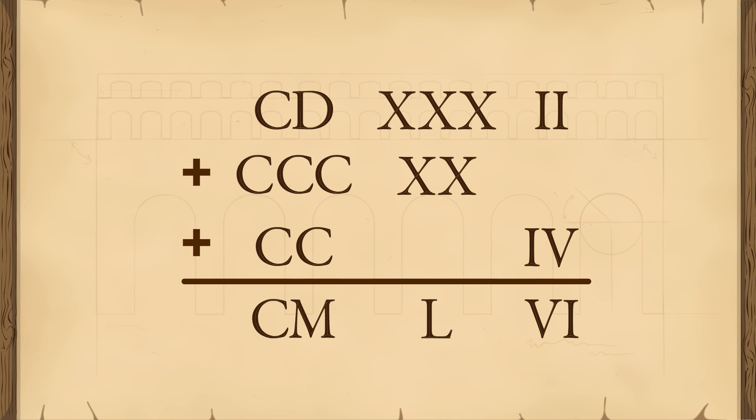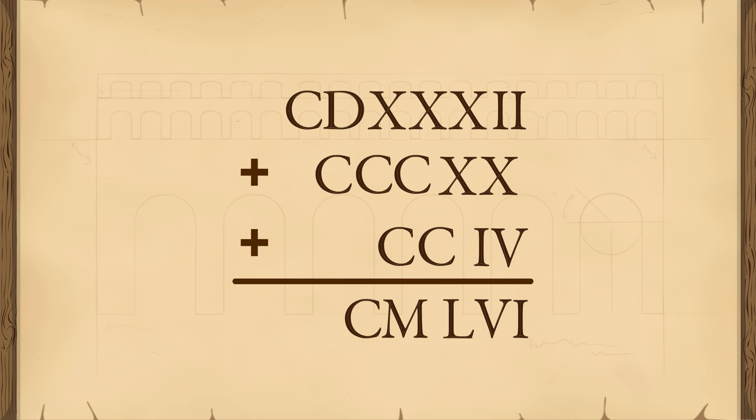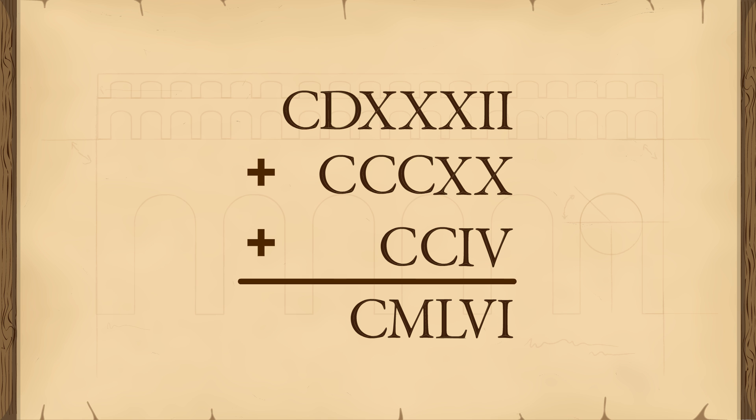The important difference between the Roman number system and our modern system is that in the Roman system, the position of a symbol within a number doesn't determine the value. Since symbols do not have to fall into particular columns, zeros are not needed as a column placeholder.